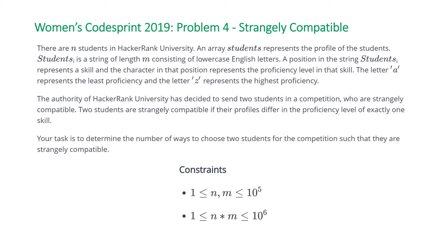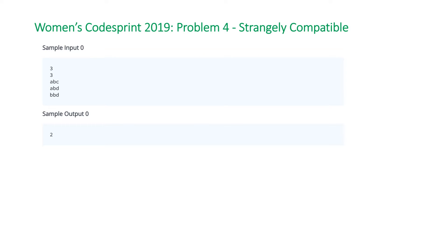Let's take a look at the example HackerRank provides. The first number three represents n, the number of students; the second number three represents m, the number of skills. We have n strings each of length m: abc, abd, and bbd. The problem statement is a bit confusing, but it's pretty easy to understand — they want you to find the number of pairs of strings that only differ by one character.